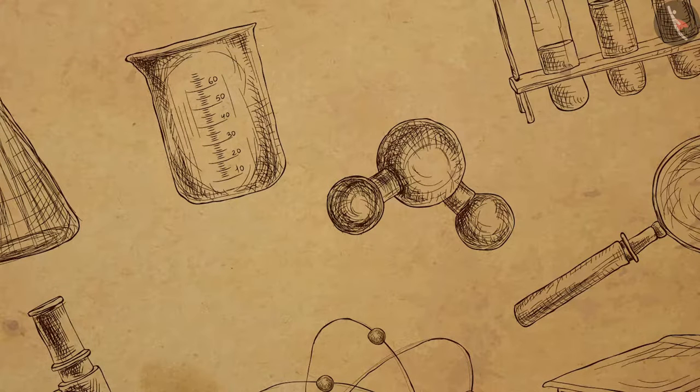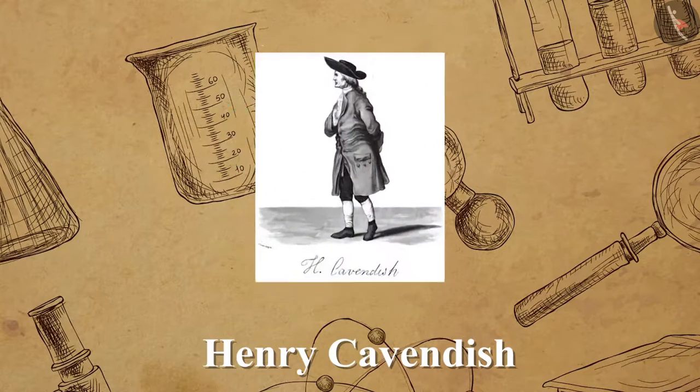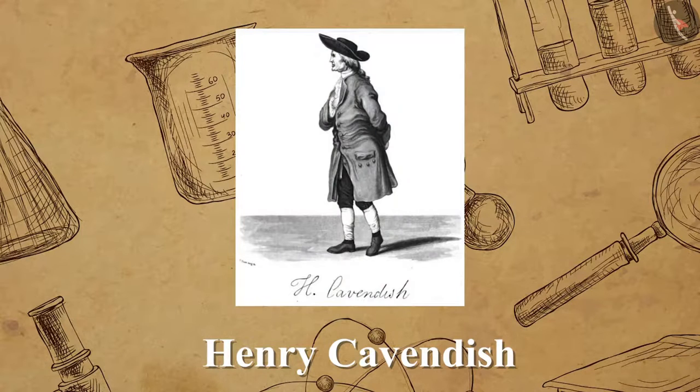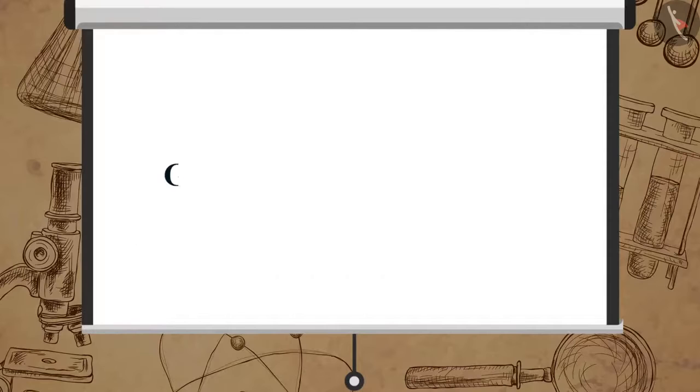The value of universal gravitation constant G was calculated by Henry Cavendish. He used a sensitive balance to do so. The accepted value of G is equal to 6.673 multiplied by 10 raised to minus 11 Newton meter square per kilogram square.